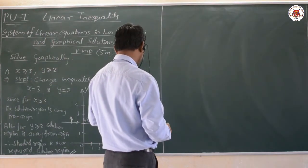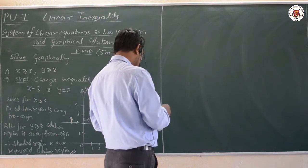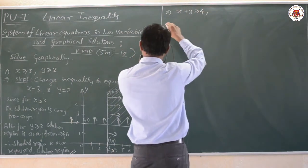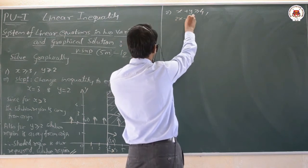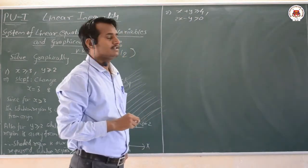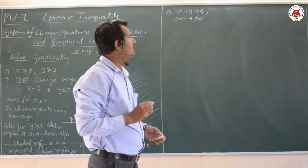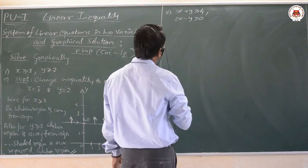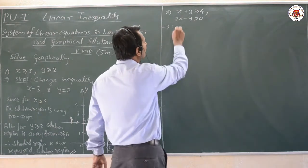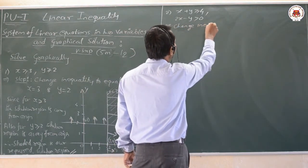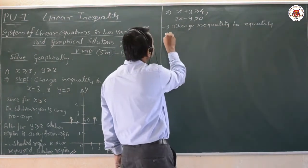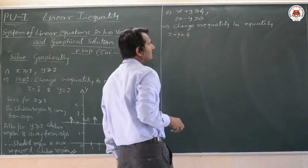The second question: x + y ≥ 4 and 2x - y > 0. Step one: change the inequalities to equalities. The first line becomes x + y = 4.